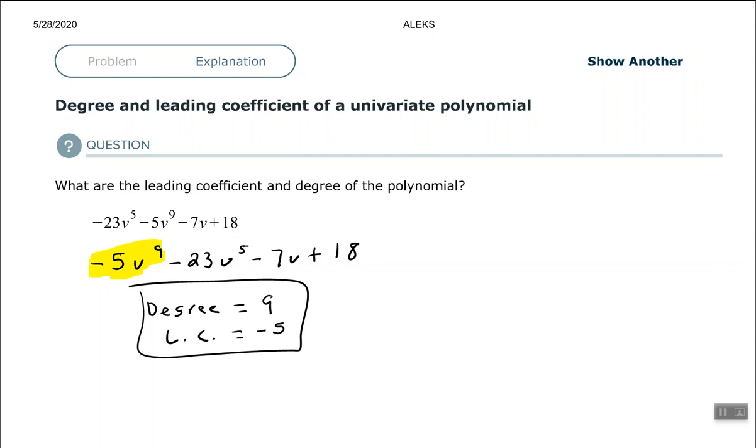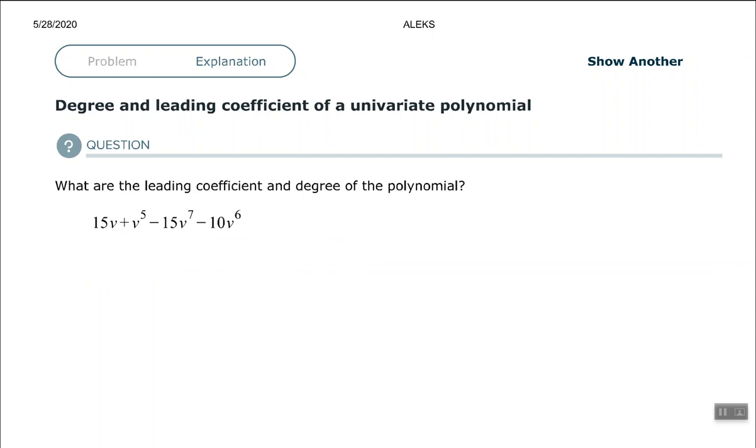All right, let's try one more of these. You may want to pause the video and try to work this one out yourself. Okay, so negative 15 V to the 7th minus 10 V to the 6th plus 1 V to the 5th plus 15 V, since the 15 V is positive, so plus 15 V.